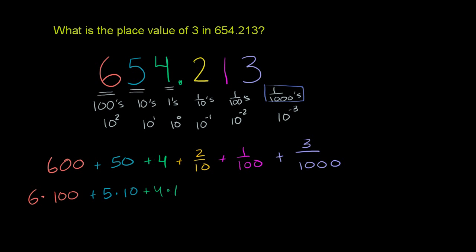Plus 2 times 1 tenth, plus 2 times 1 tenth, plus 1 times 1 over 100. And then finally, plus 3 times 1 over 1,000.